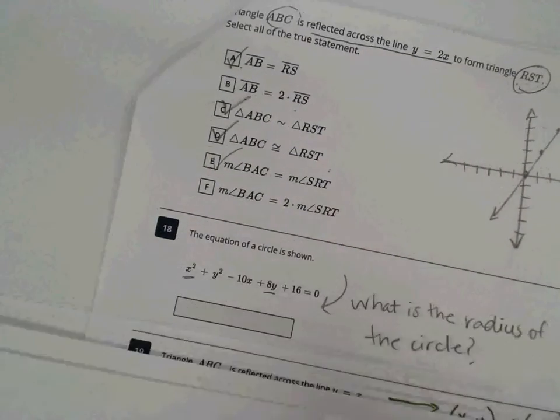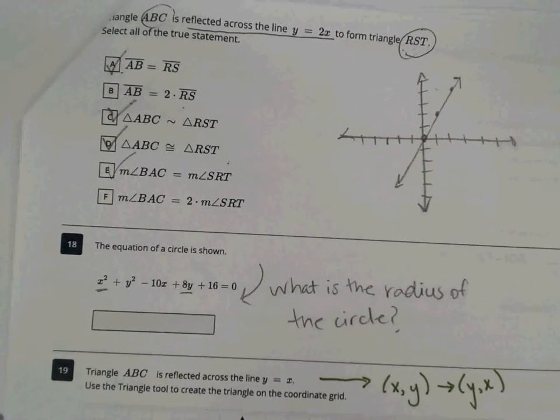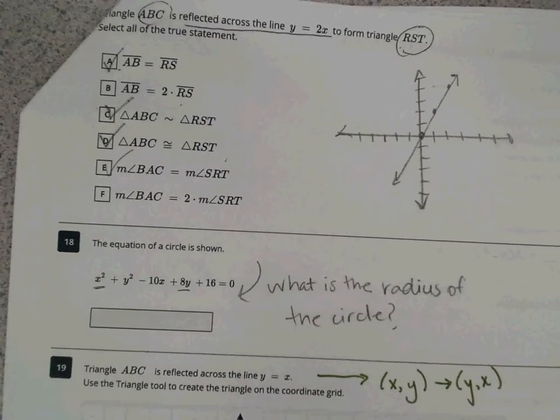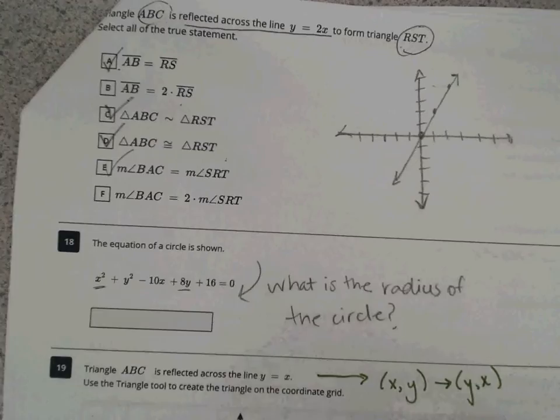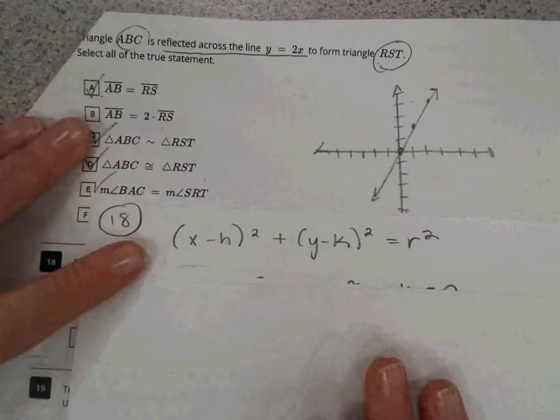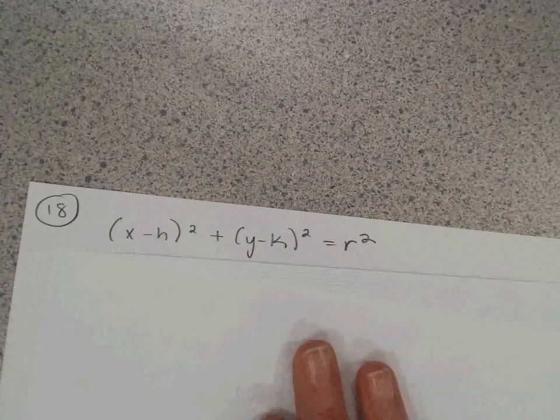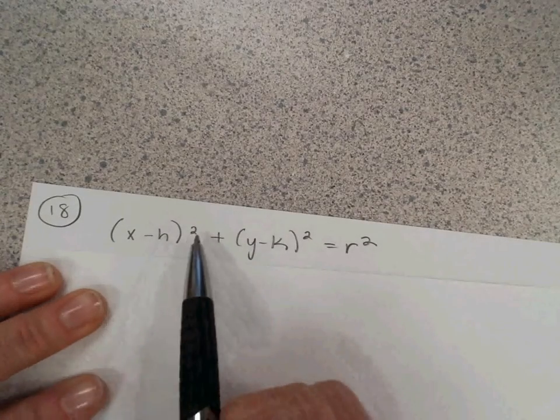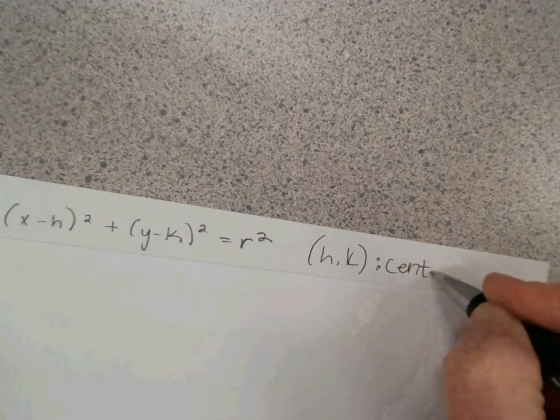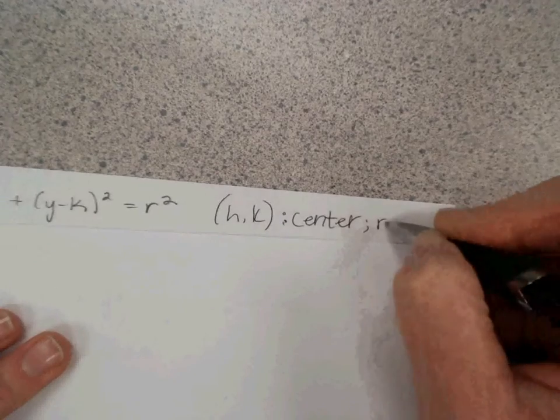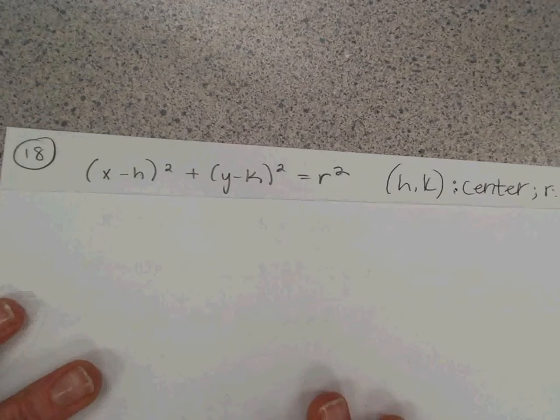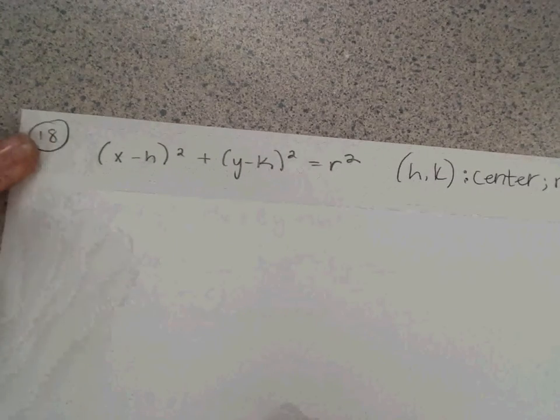Question 18 is actually asking, what is the radius? That part was left off. What is the radius of the circle? So I actually did this problem on a separate sheet of paper. A couple things we need to know. We need to know the equation, the formula for a circle. So we're ultimately looking for the radius. Let's go ahead. This involves some algebra.